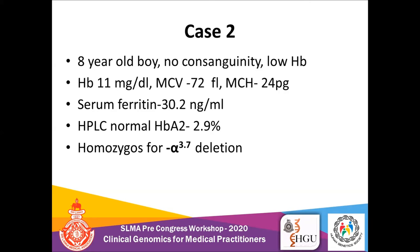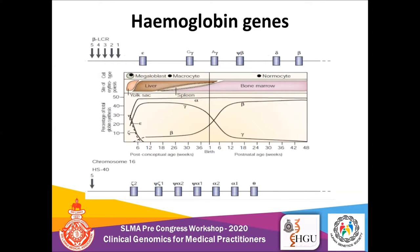Before moving further into the genetic basis, we should understand how haemoglobin genes are located within our genome. We have two clusters of haemoglobin genes — the globin genes including alpha globins, beta globins, gamma, and delta. The first cluster is on chromosome 11, where the beta, gamma, and delta globin genes are located. The second cluster is on chromosome 16, where both alpha-1, alpha-2, and several other types of globin genes are located.